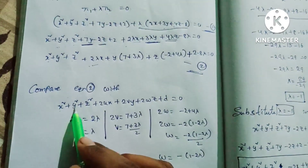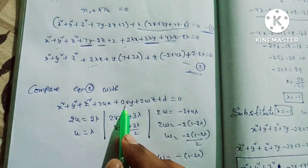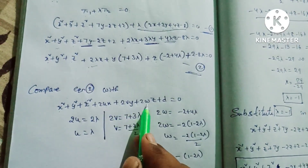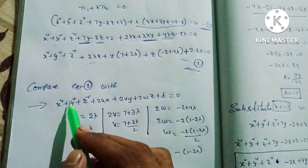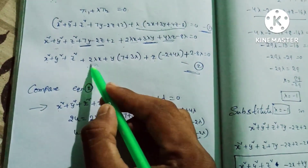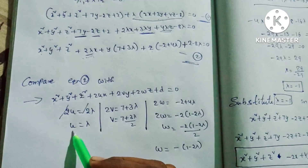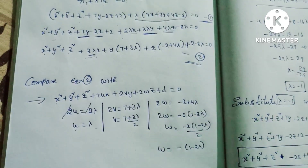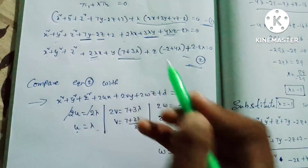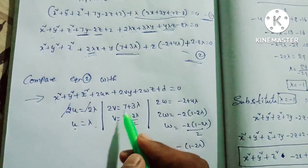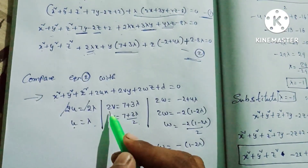The general formula is x² + y² + z² + 2ux + 2vy + 2wz + d = 0. We compare this. So 2u = 2λ, which gives u = λ. And 2v = 7 + 3λ, so v = (7 + 3λ)/2.